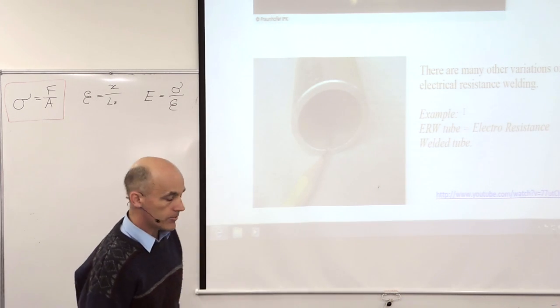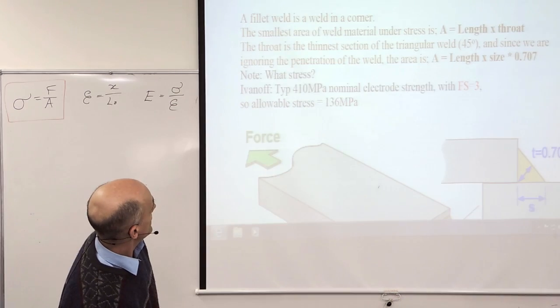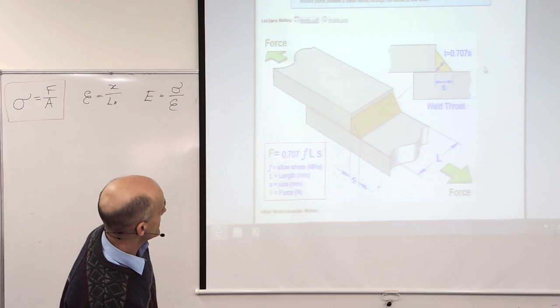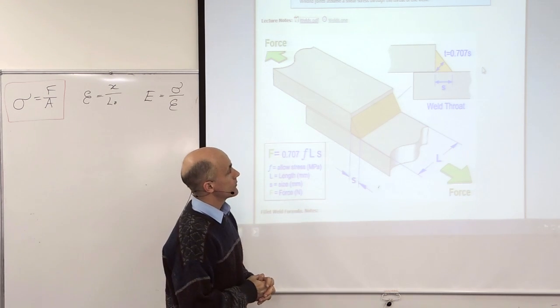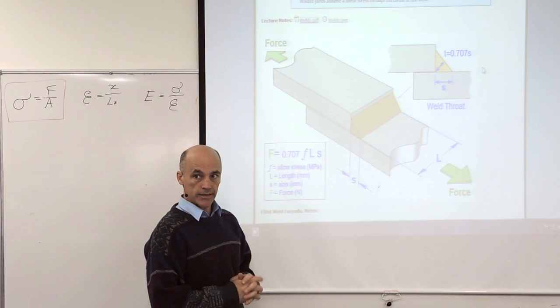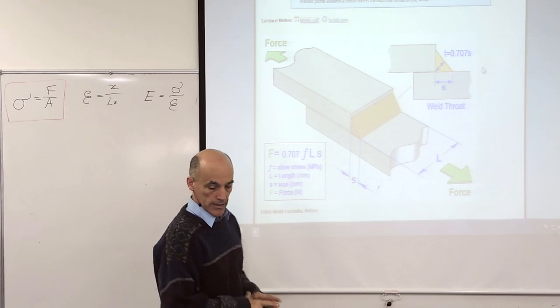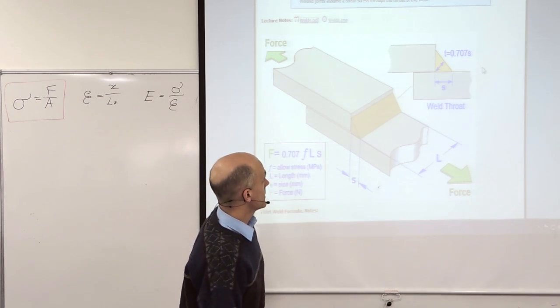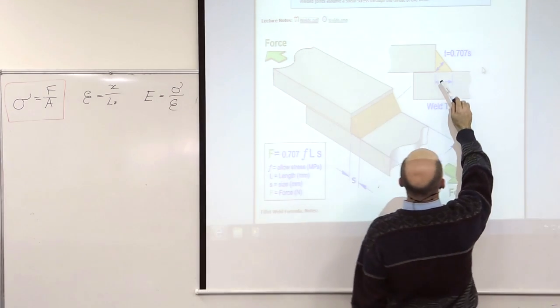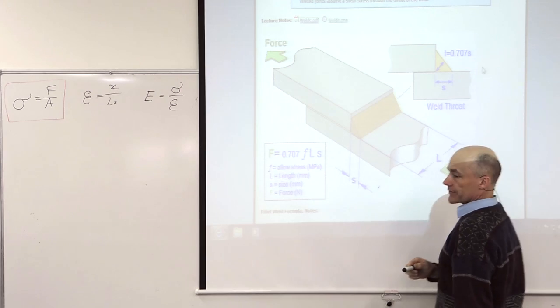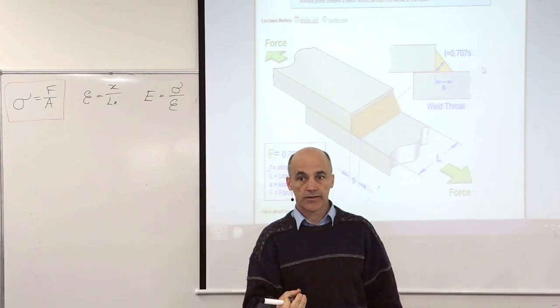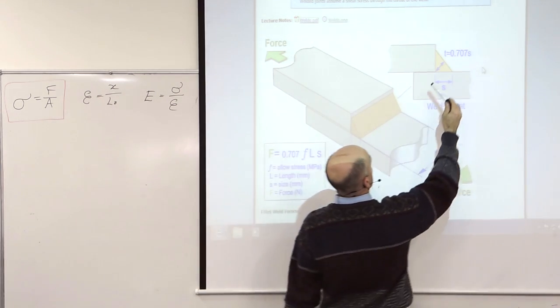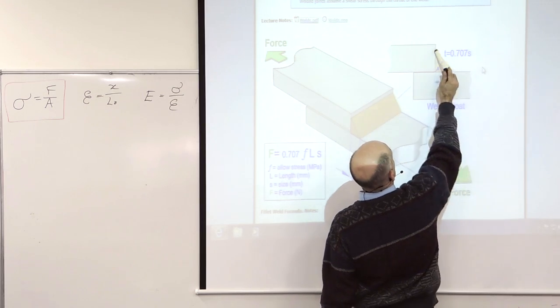We're back to the fillet weld situation. A little bit more work to do with a fillet weld. Now the main key with a fillet weld really is that the size of the weld, which is S, size of the weld, is not the same as the thickness of the weld. Now the thickness of the weld we call the throat, T. So because this is 45 degrees, we're assuming it's 45 degrees.